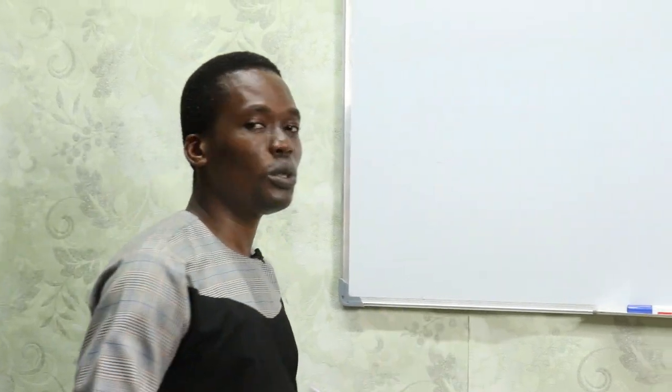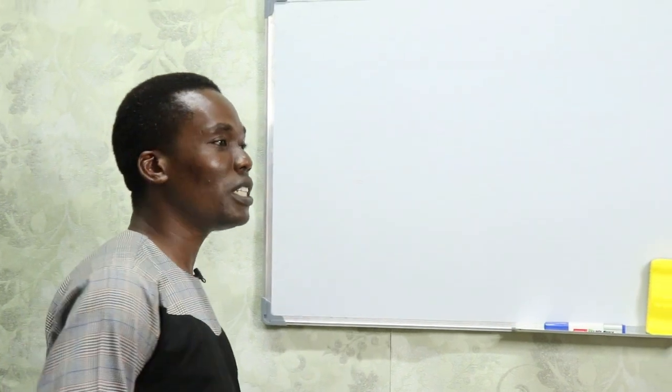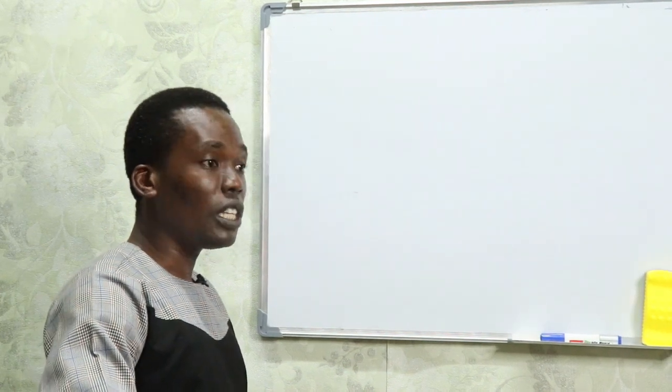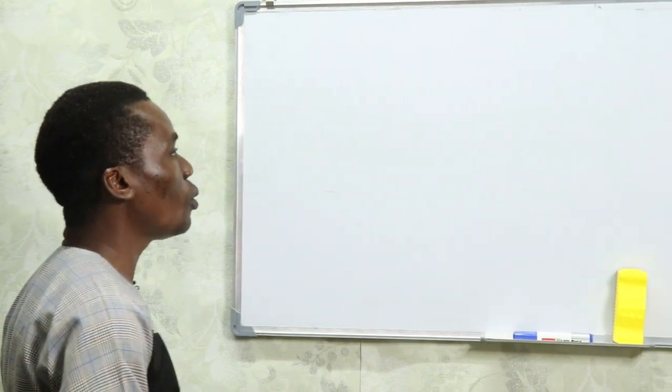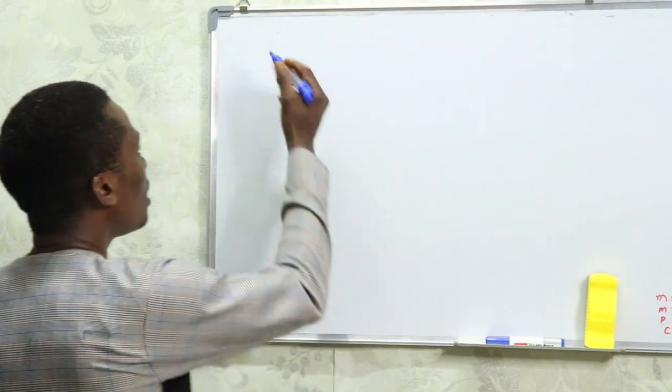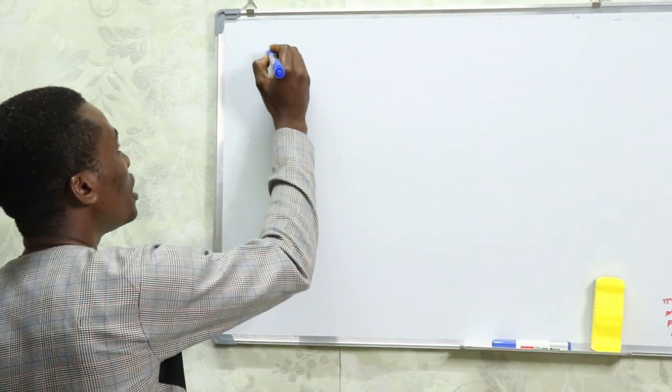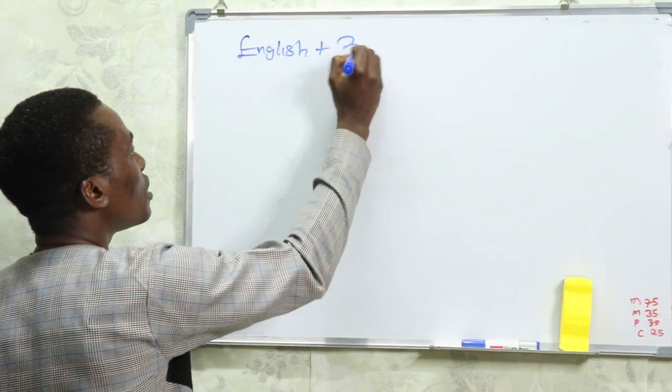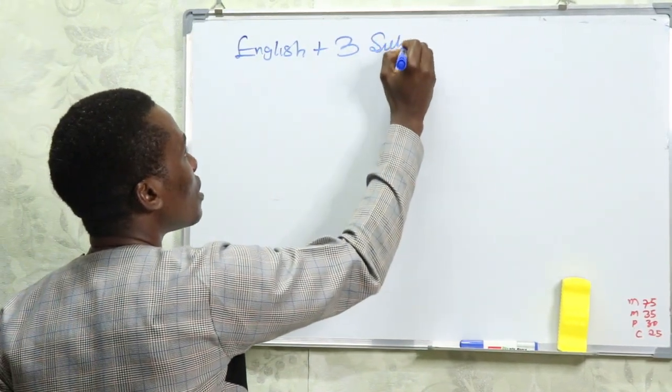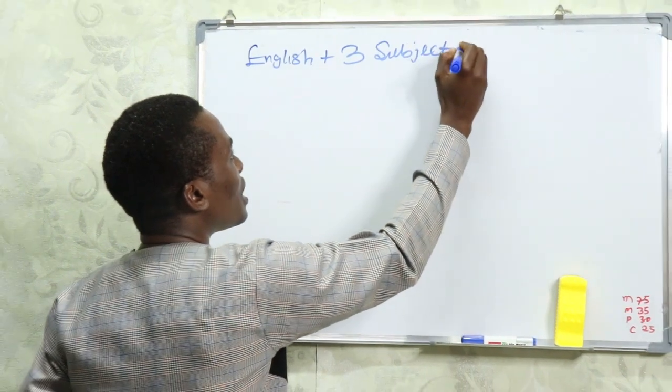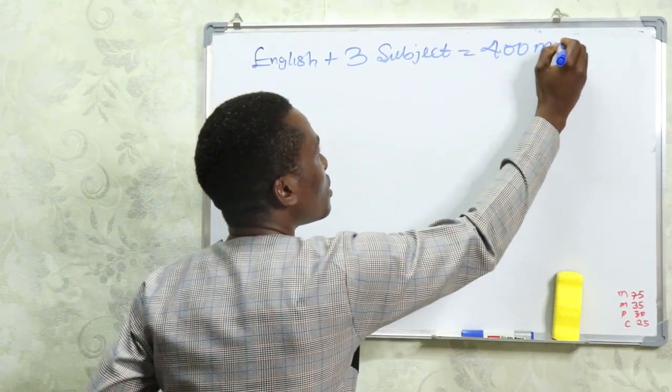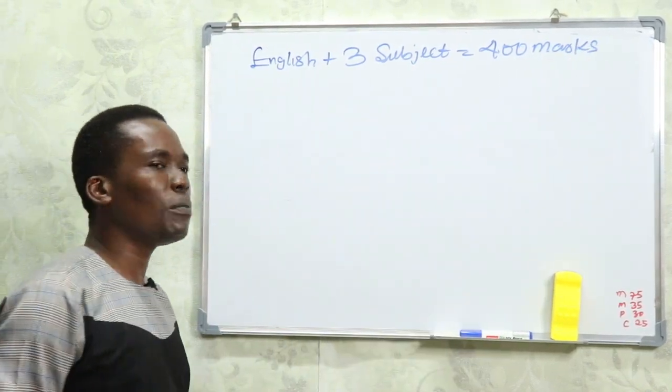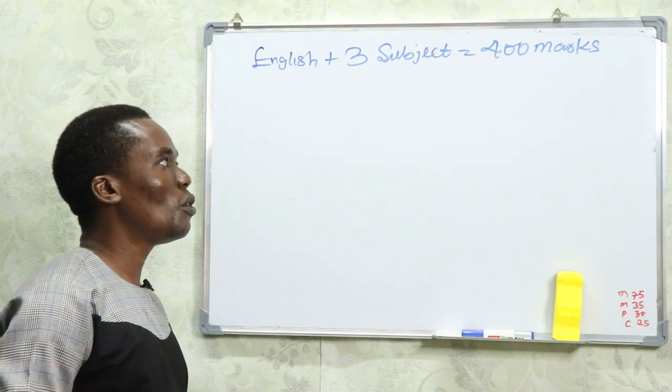The last time I told you that all you need to do in your English language, the English is going to be a hundred mark. We talked about the whole subject. The whole subject you'll be taking will be a 400 mark for all your subject combination, English plus three subjects. You'll be taking this for 400 marks.